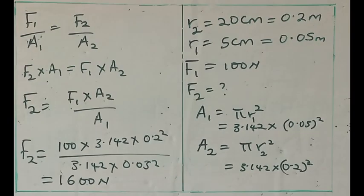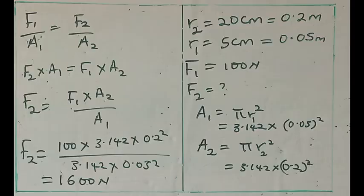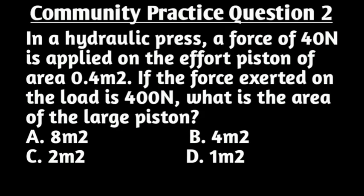Okay, take the following assignments. The area of the effort and load piston of the hydraulic press are 0.5 meters square and 5 meters square respectively. If a force F1 of 100 newtons is applied on the effort, what is the force F2 on the load? Another assignment. In a hydraulic press, a force of 40 newtons is applied on the effort piston of area 0.4 meters square. If the force exerted on the load is 400 newtons, what is the area of the large piston?